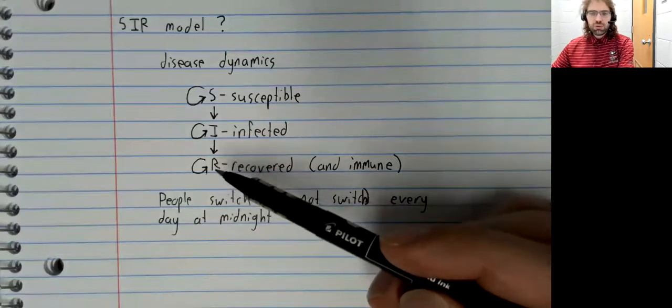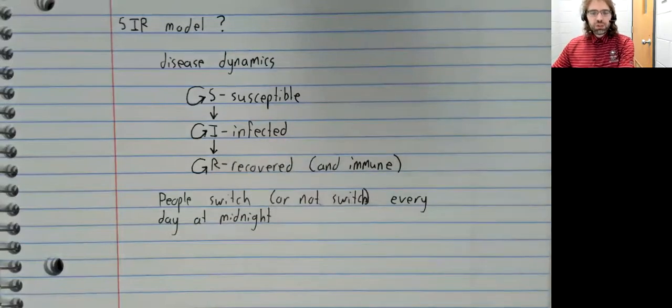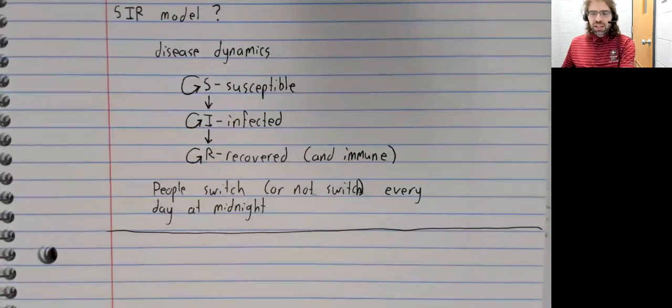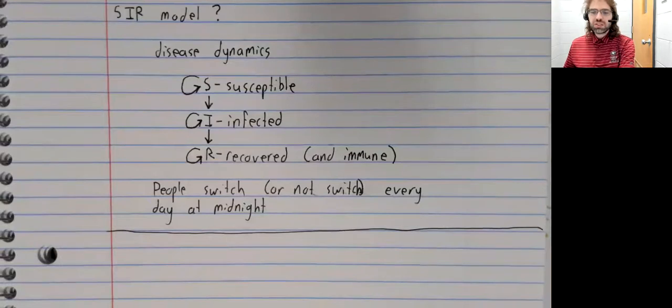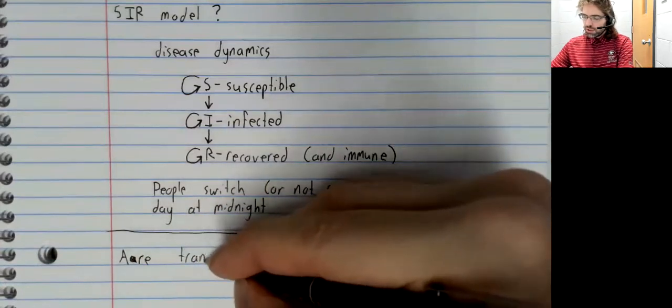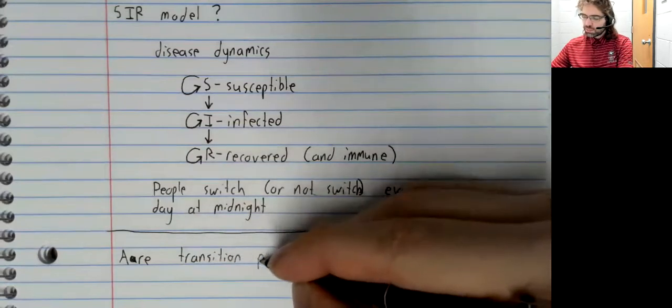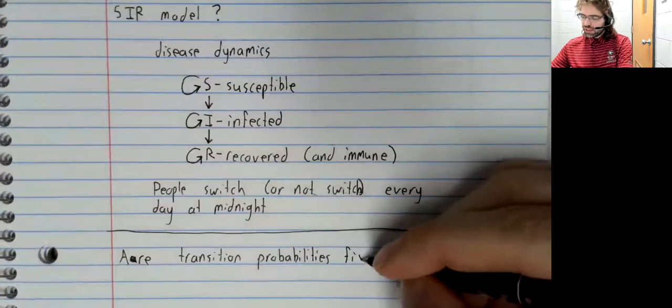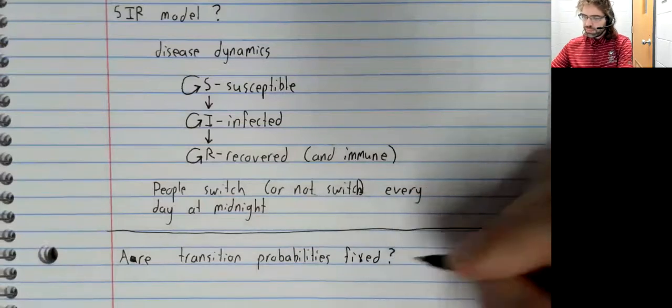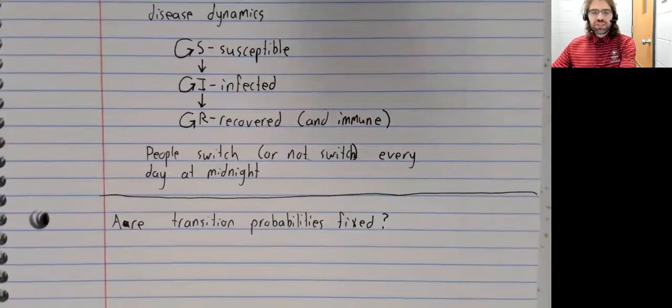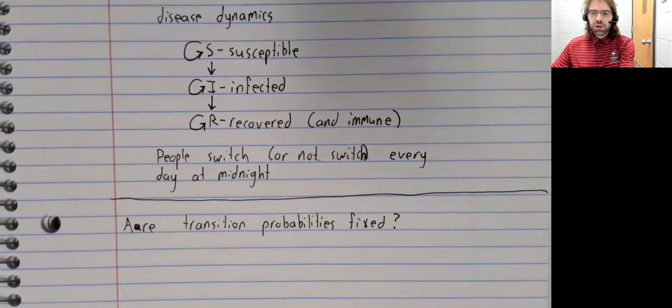There is nowhere else to go from here. So this is our prospective Markov chain. In many situations, however, this wouldn't be one. Are the transition probabilities fixed? That's the big question. If the answer is no, this isn't a Markov chain, and in many cases, the answer is going to be no.